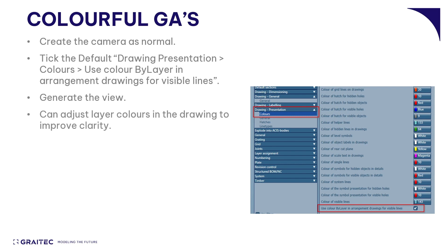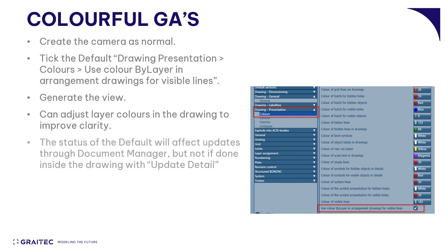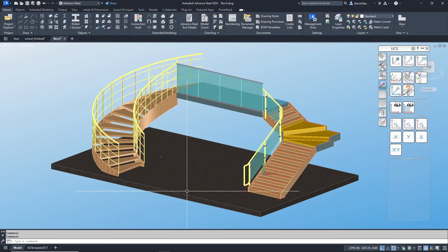All the lines in the drawing will match the color of the objects in the model. You can adjust colors if you want to inside the drawing to improve clarity. This time though, the status of the default will make a big difference when you update. If that default has been turned off when you update in document manager, all your GA views will go back to one single color. But if you go into the drawing itself and use the update detail command, it will preserve whether it's color or monochrome. If you update from document manager they will all change to suit whatever that default says at that point in time.